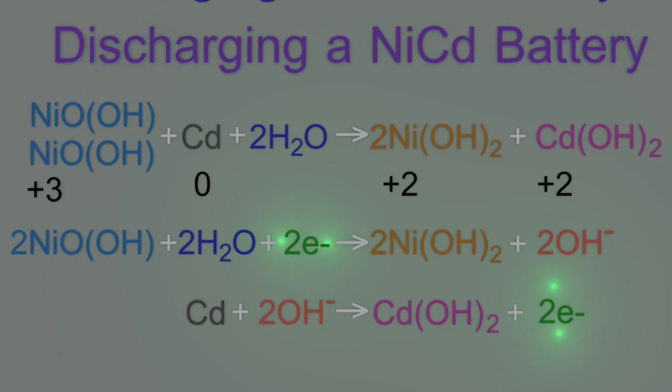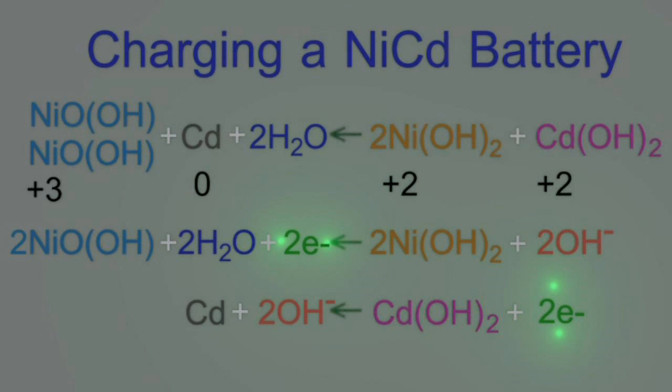So on the charging cycle you just have to reverse those equations and now electrons go from the nickel two hydroxide to the cadmium hydroxide as your battery is charging.